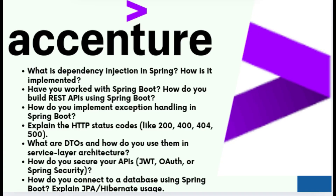The next question was: explain HTTP status codes like 200, 400, 404, and 500. 200 OK means the request was successful. 400 Bad Request is a client-side error, such as invalid input. 404 Not Found means the requested resource does not exist. 500 Internal Server Error means something went wrong on the server.